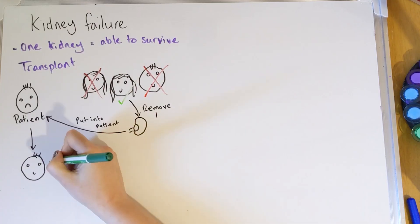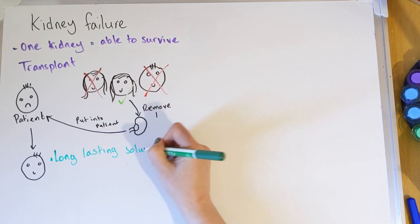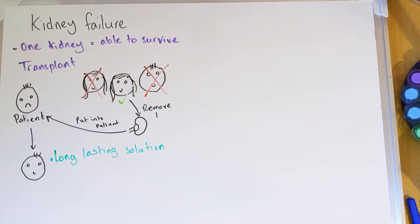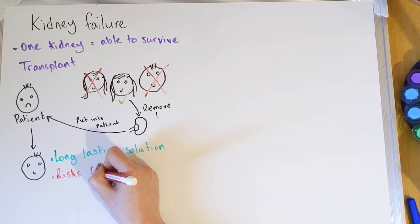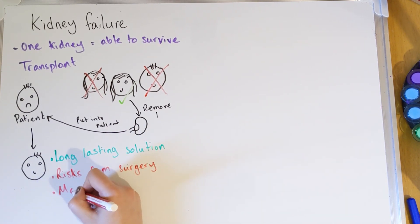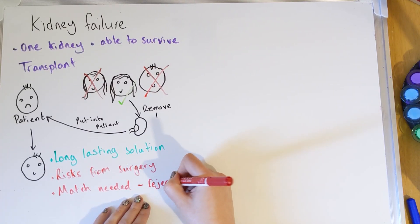The pros of a transplant: it's really long-lasting — once you've had a kidney transplant, as long as you treat it properly it can last the rest of your life. However, drawbacks include needing to find a tissue match and the risks that come with any surgery. If you were to put in a kidney that wasn't a match, the patient's body would reject it, treating it as a foreign pathogen and attacking it with the immune system.